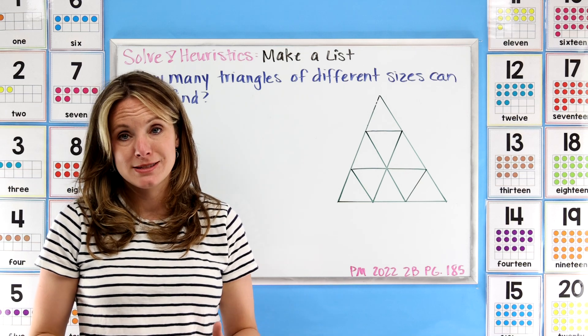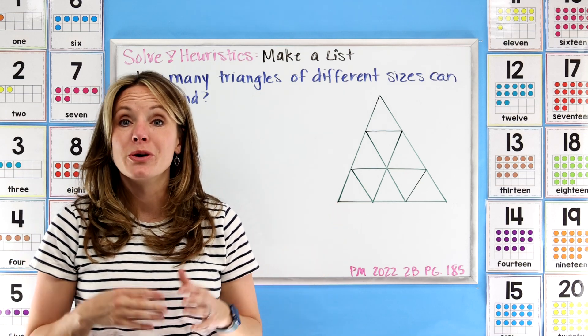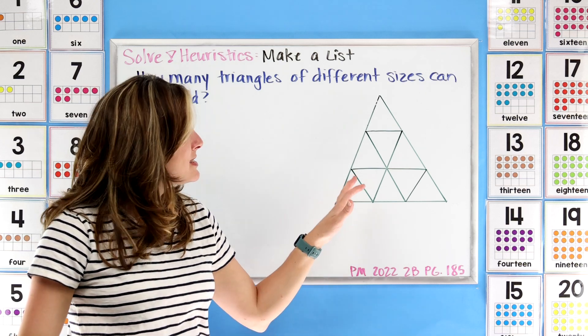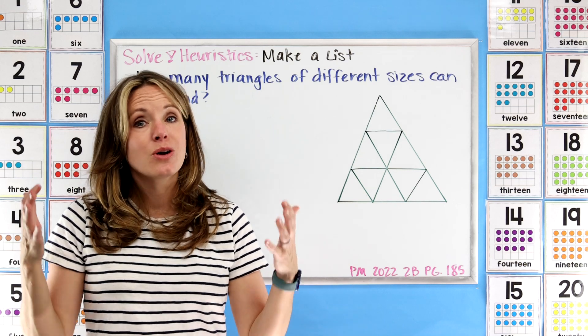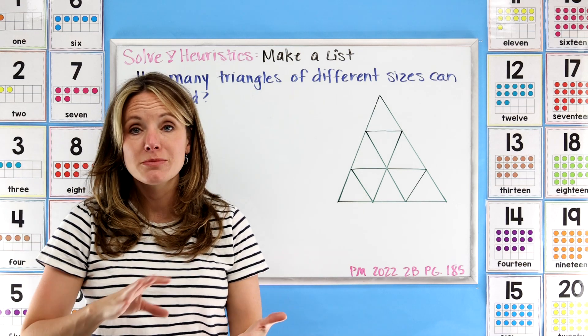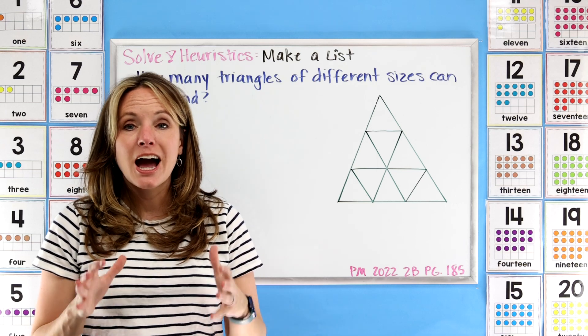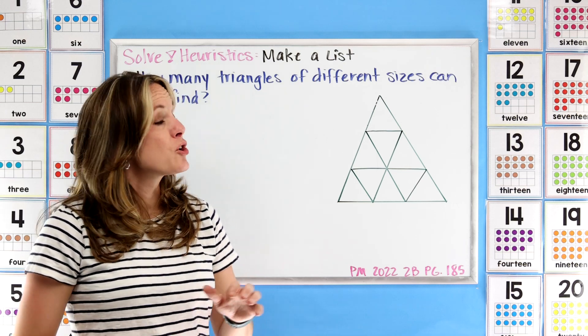So now here's the part where you're going to do - whether you take some triangles and you replicate this, or you just grab a whiteboard or a notebook and you start making your list - all those are great strategies. But I want you to see how many different triangles you can find. Go ahead, sketch them out, come back when you're ready, and then we're going to solve it together.